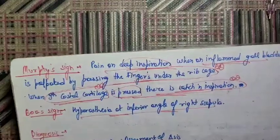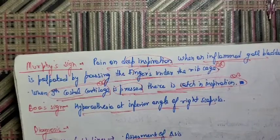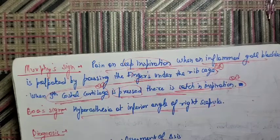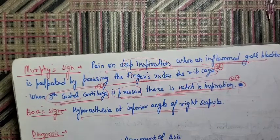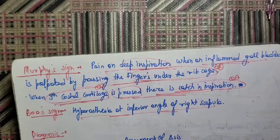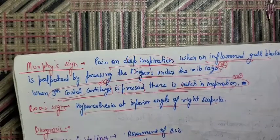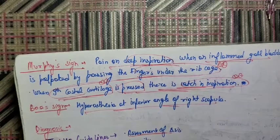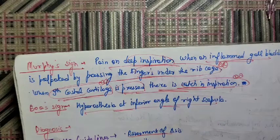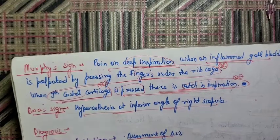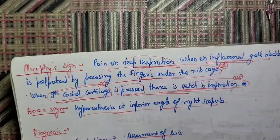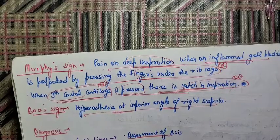Murphy's sign is pain on deep inspiration when the inflamed gallbladder is palpated by pressing the fingers under the rib cage. When you deeply palpate the gallbladder under the rib cage, there is pain. When the 9th costal cartilage is pressed, there is a catching of inspiration — that is Murphy's sign. There is also hyperesthesia at the inferior angle of the right scapula.